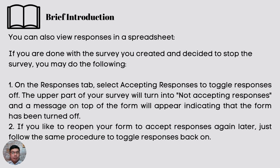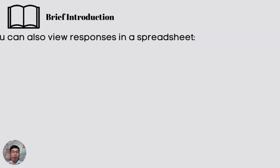You can also view responses in a spreadsheet. If you are done with the survey and decided to stop it, on the Responses tab select Accepting Responses to toggle responses off. The upper part of your survey will turn into 'not accepting responses' and a message will appear indicating that the form has been turned off. If you like to reopen your form to accept responses again later, just follow the same procedure to toggle responses back on.